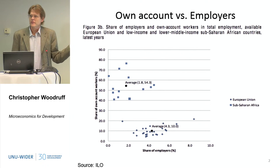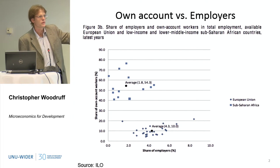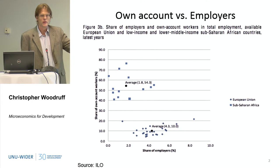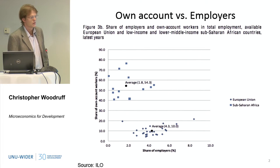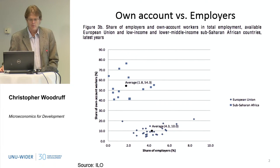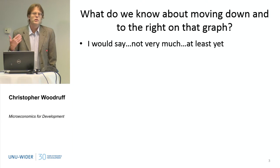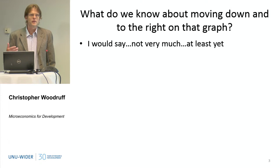At least in the cross-section — and we can ask whether this is true longitudinally as well — development is a process of moving from the upper left towards the lower right. That is, firm sizes grow as incomes rise, at least in the cross-section. So what do we know about moving downward and to the right on the graph?